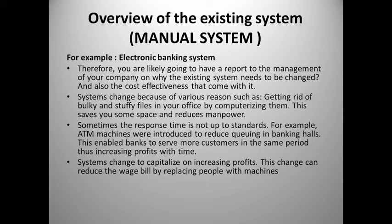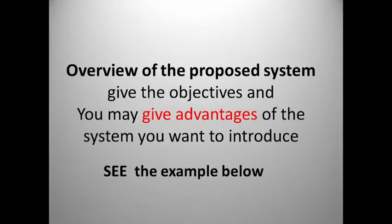System change can happen for various reasons, such as getting rid of bulky and stuffy files in your office by computerizing them, which saves space and reduces manpower. Sometimes the response time is not up to standards — for example, ATMs were introduced to reduce queuing in bank halls, enabling banks to serve more customers in the same period, thus increasing profits and efficiency. System change can also reduce the wage bill by replacing people with machines.